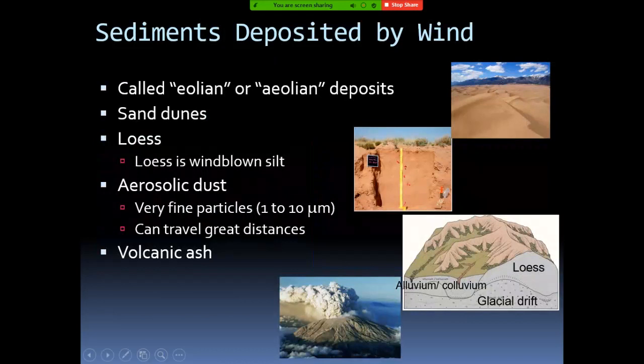In some cases we have something called loess, which is basically wind-blown silt. Since soil particles include sand, silt, and clay, loess is composed mostly of silt. Silt is easy to erode and can be carried by winds over long distances. If the deposit is composed mainly of silt, we call it aeolian dust. The sand dune is mostly composed of sand, whereas aeolian dust particles can be very small — 1 to 10 micrometers — and we call these particulate matter. These can be carried for very long distances.